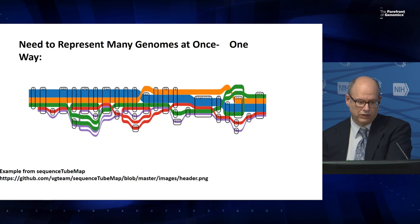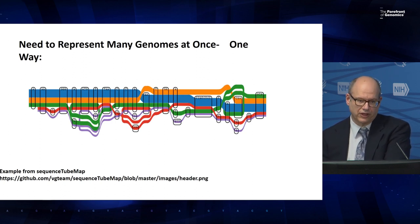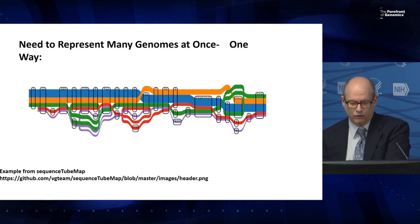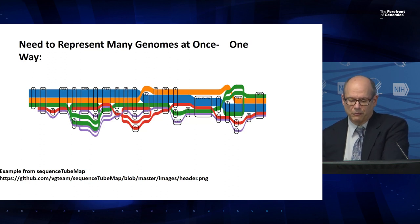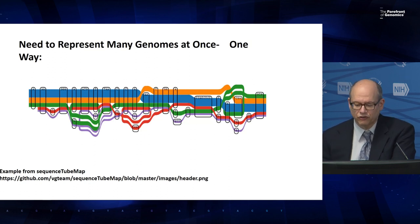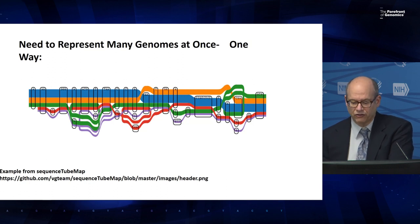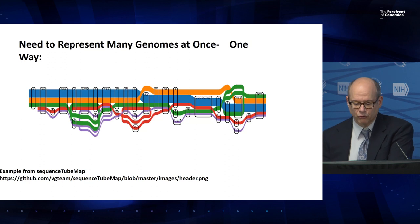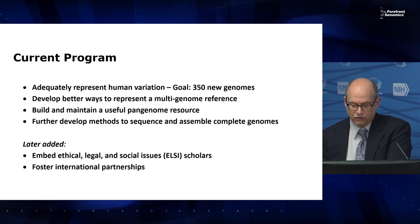But it's not enough — you need a way to represent many genomes at once, to conceive of them, to think about them, and most importantly, to compute on them. Regions where genomes are the same only need to be represented once. Where there are SNPs or indels, the genomes containing them are represented separately for just that region. Inversions, duplications, and other structural variation can be represented as well. A reference resource that represents many genomes at the same time is called a pan genome.